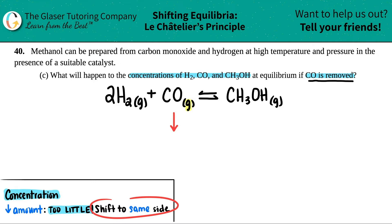If you have too low of something, you will shift to the same side. So you will be going in the reverse direction here because you shift in the same side of what you decreased.